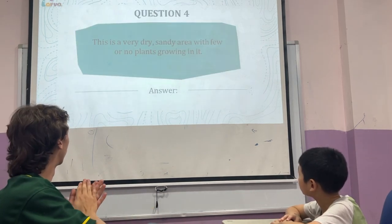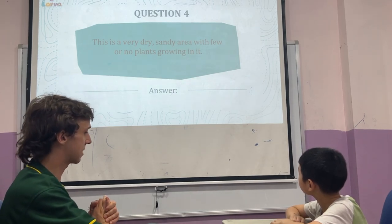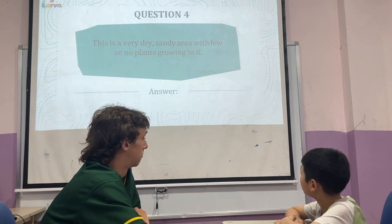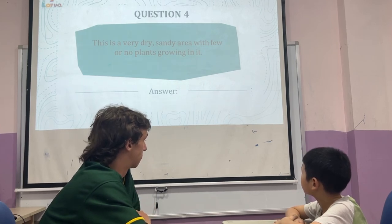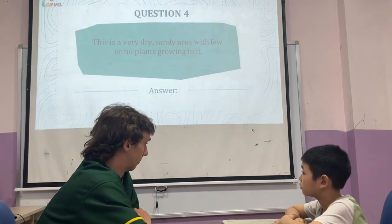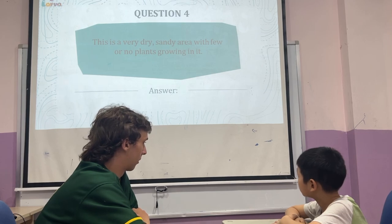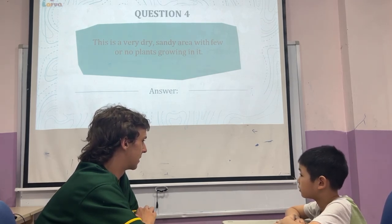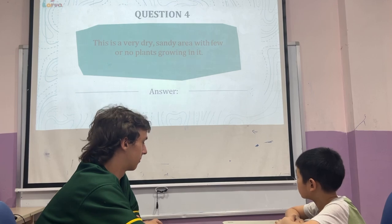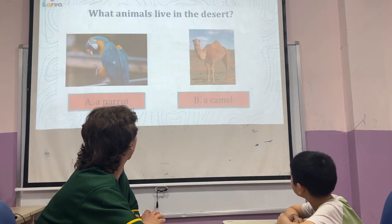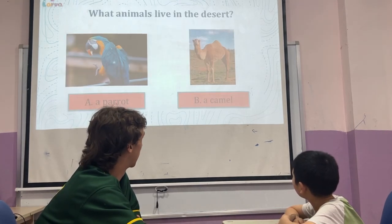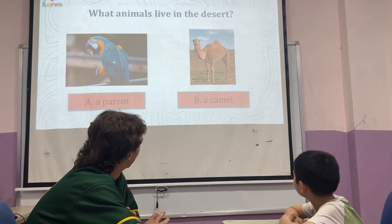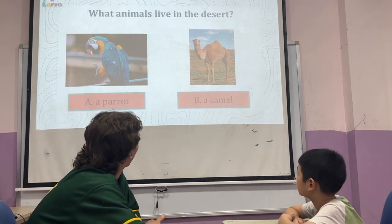Number four. This is a very dry, sandy area with no plants. It's in warm places. Very dry. Desert. A desert. And what animal lives in the desert? A camel. Yep, a camel.